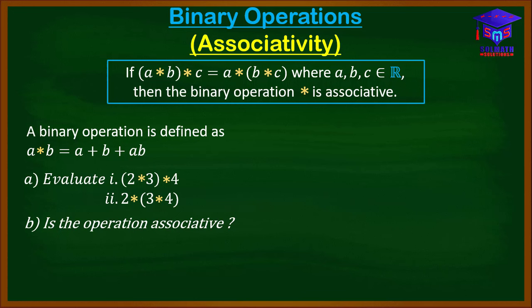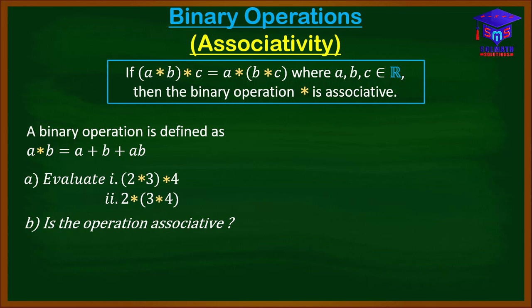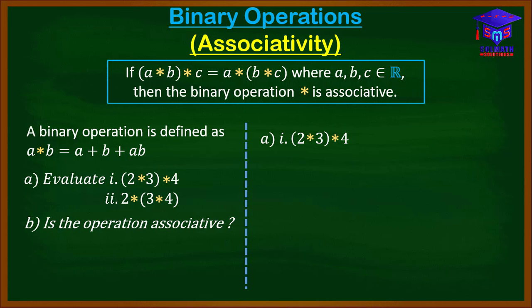Let's look at a couple of examples on binary operations. A binary operation is defined as A★B = A+B+AB. We are asked to first evaluate (2★3)★4, then evaluate 2★(3★4), and then determine whether the binary operation is associative.